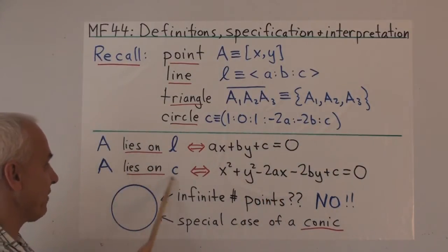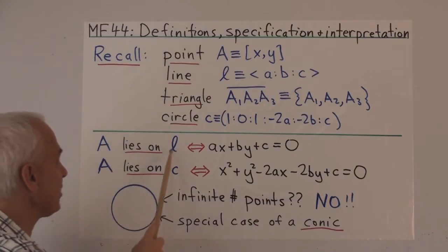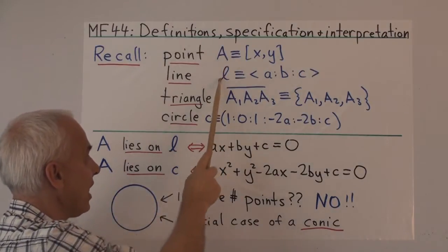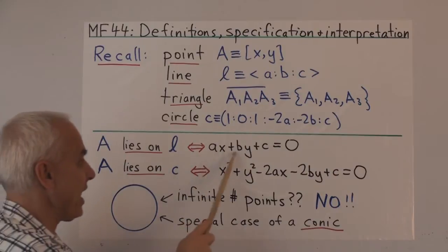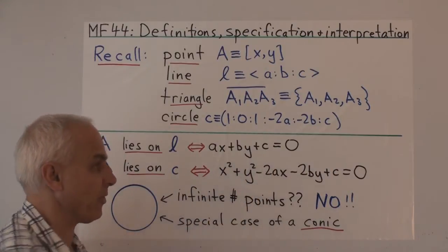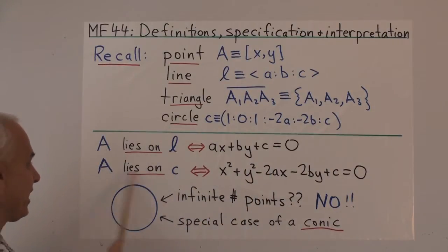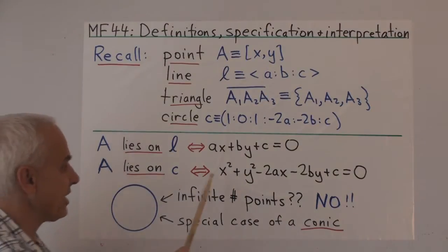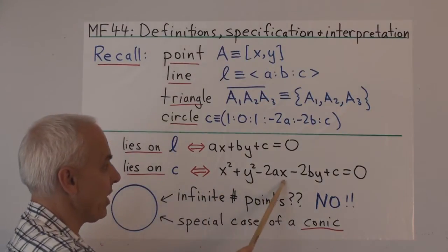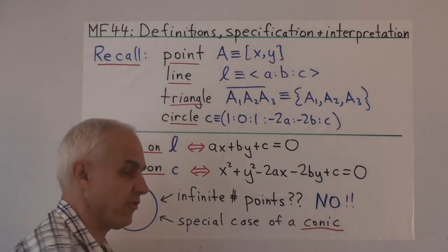So these are also part of the definitions. We say that the point A lies on the line L precisely when AX plus BY plus C equals zero. And the point A lies on the circle C precisely when X squared plus Y squared minus 2AX minus 2BY plus C equals zero.